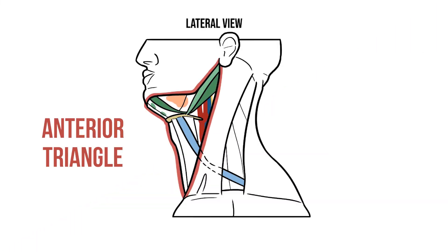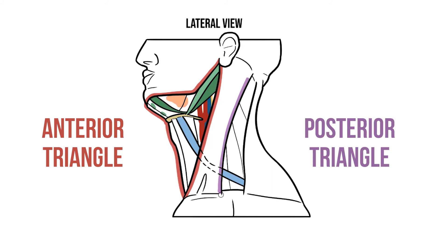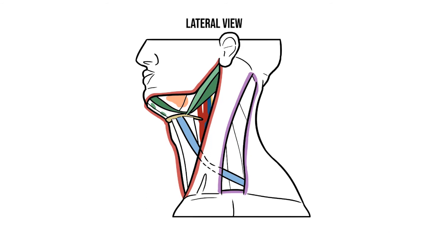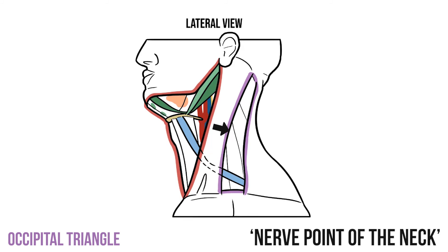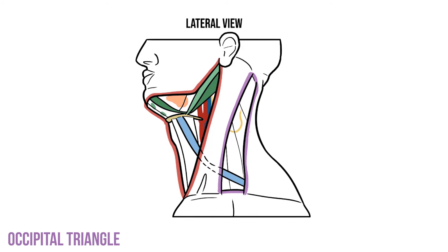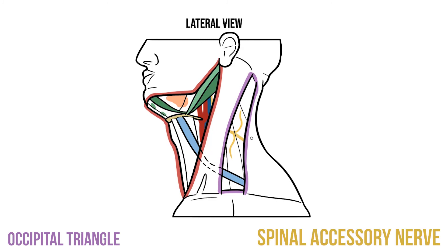If we have an anterior triangle in front of sternocleidomastoid, we'll find a posterior triangle behind it. The other borders of this space are trapezius posteriorly and the clavicle inferiorly. We can subdivide this triangle into two smaller regions found on either side of omohyoid. Superiorly we have the occipital triangle, named after the occipital bone that lies above it. The main things found here are nerves, which generally emerge from under SCM at a location known as the nerve point of the neck. Most of these nerves are superficial branches heading to the skin over the neck and head, but we also have the spinal accessory nerve that supplies trapezius.